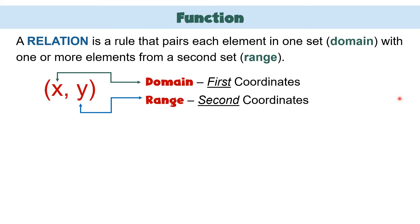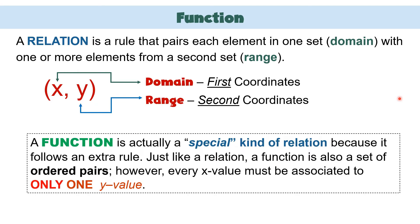Let's go back to the definition of relation. How can we relate this to function? When we say function, it is actually a special kind of relation. Function is also a relation. We call it special because it follows an extra rule. Just like a relation, function is also a set of ordered pairs. However, every x-value must be associated with only one y-value. It means x must only have one y-partner — only one y-value.